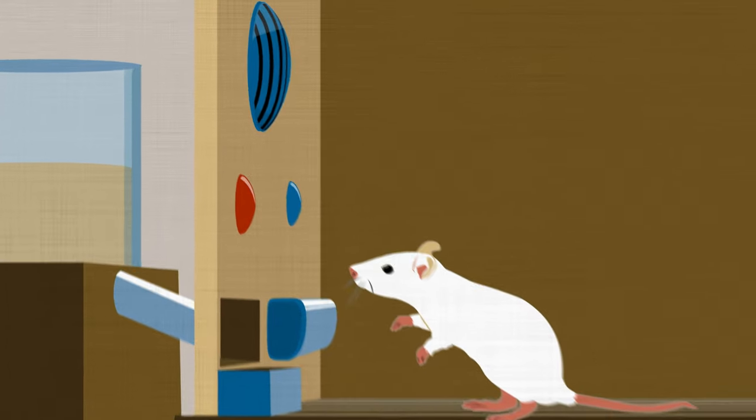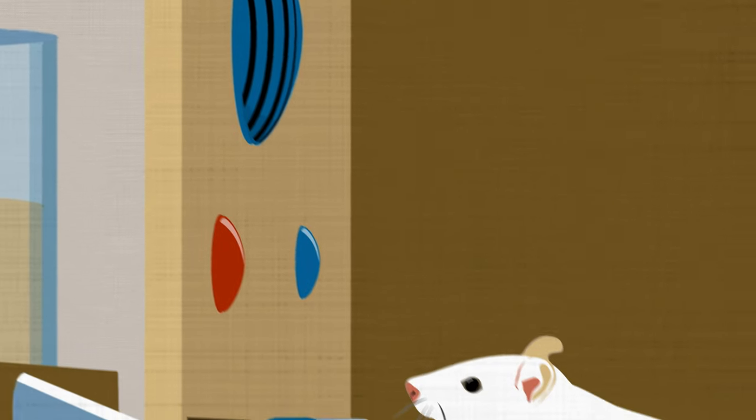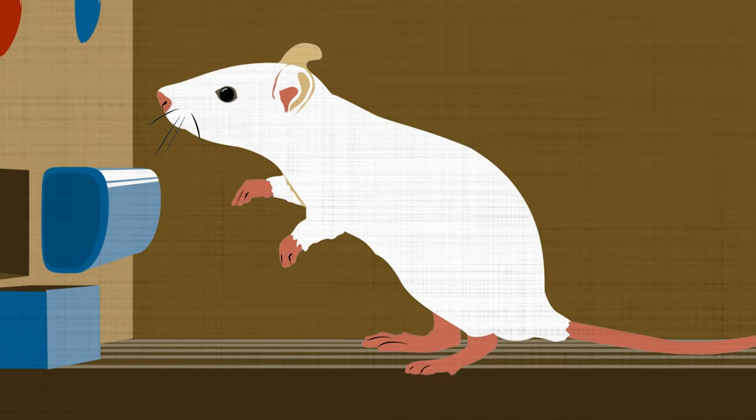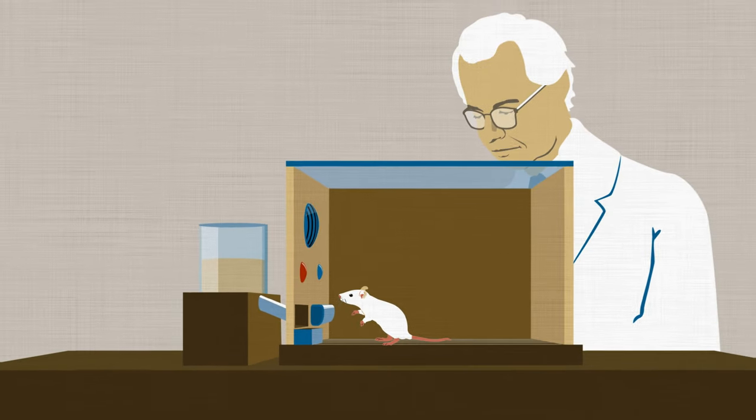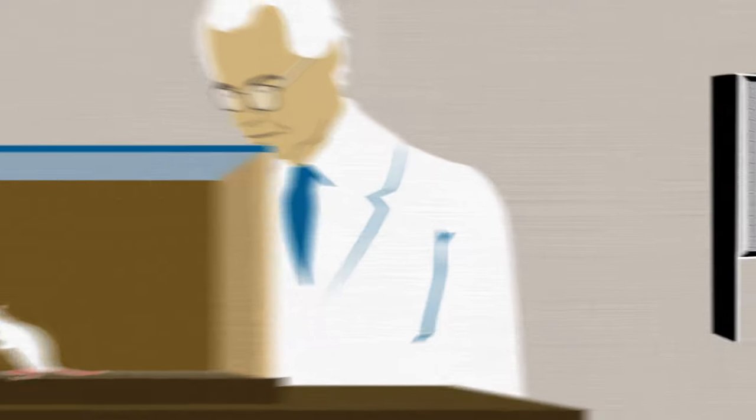But the experiments on rats conducted by the radical behaviorist B.F. Skinner led him to counter that the main drivers of behavior are really positive and negative reinforcement—reward and punishment in effect.